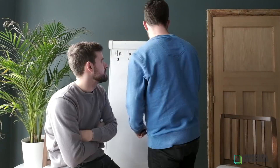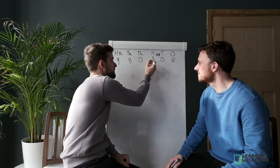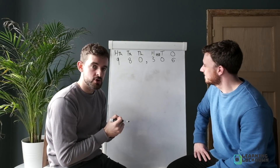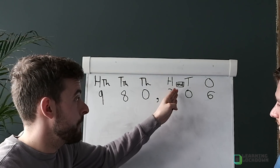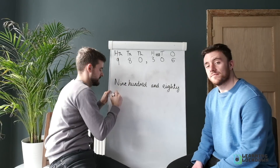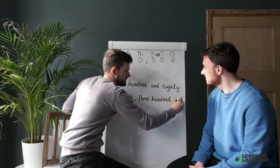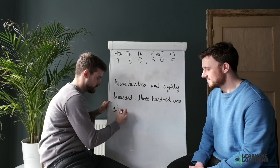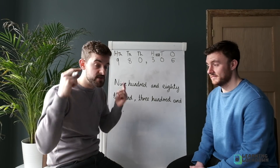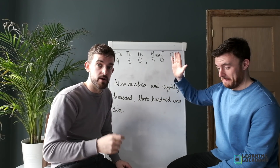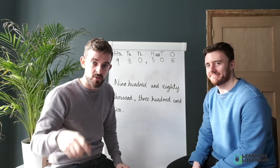One more for year five. Put the comma in to help with the thousands family. Looking at those three digits: nine hundred and eighty — so nine hundred and eighty thousand. Then three hundred and six. Full number: nine hundred and eighty thousand, three hundred and six. Writing it: Nine hundred and eighty thousand, comma, three hundred and six. Click the links below — there are audio files to write as digits and numbers to write as words. Mark scheme goes up tomorrow. Drop out, year five.